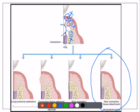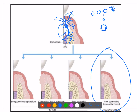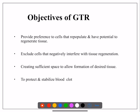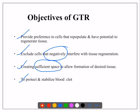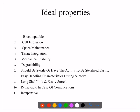The problem is PDL cells, being the good ones, take time. Before they arrive, the other cells come first. So we need to protect the space — like reserving a chair for the most important guest when four guests arrive but only one chair is available. You preserve that space for the right cell. That is Melcher's concept. The objectives of GTR are: to stabilize the blood clot, create sufficient space, exclude the negative cells, and give preference to the cells that repopulate properly.